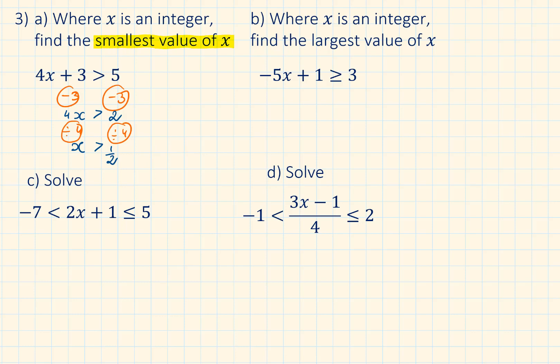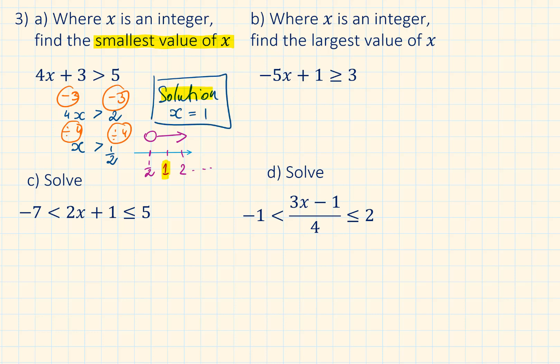To understand this better I am going to draw a number line. A half is not included but everything greater than it is included. Which one is the first whole number? The smallest out of all of this is 1. So the final solution is x equals 1.